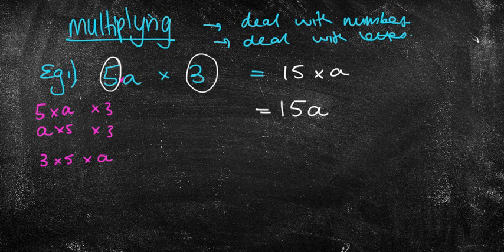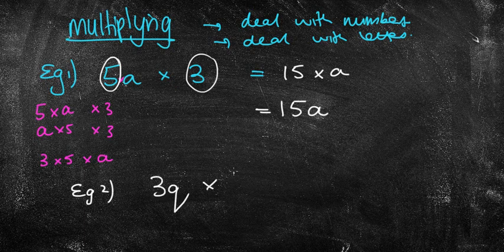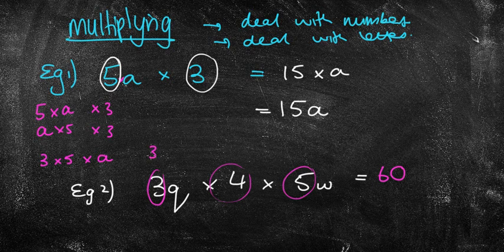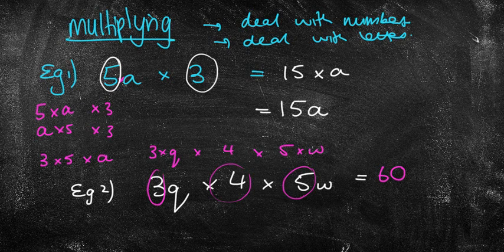They don't need to be like terms because they're all separated by a times sign. So example 2 you might have 3q times 4 times 5w. Well once again I'm going to deal with the numbers only. 3 times 4 is 12. 12 times 5 is 60. Again that's because you've got 3 times q times 4 times 5 times w. Doesn't matter where you times those first. So I'm just doing the numbers first.